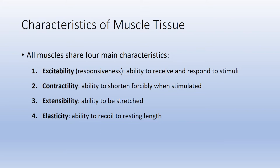The third characteristic is extensibility. If you think of holding up a textbook and lowering your arms to set it down, you are actually stretching your biceps brachii muscle in the anterior arm — all of our muscles have the ability to be stretched. And lastly, elasticity: despite the fact that we can stretch our biceps brachii, it has the ability to return to its resting length, like an elastic hairband.